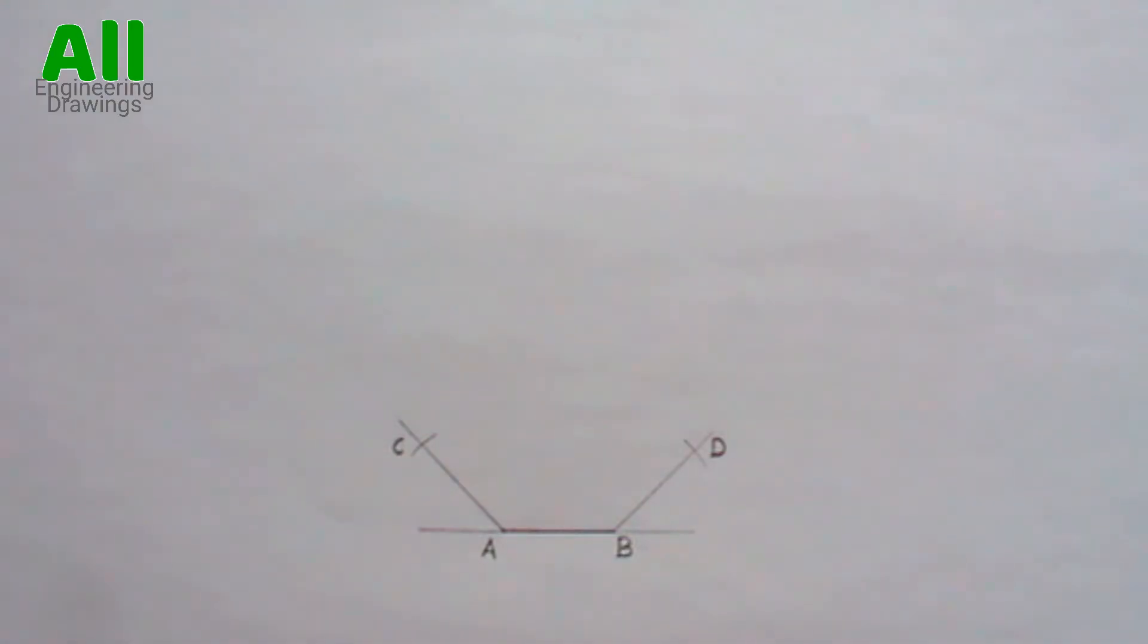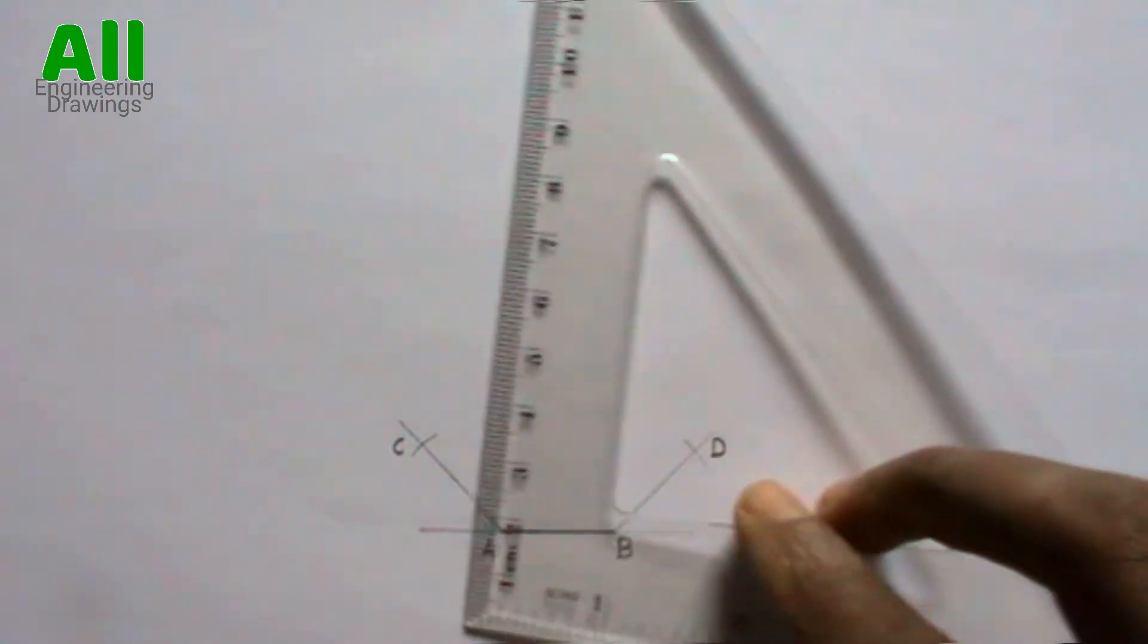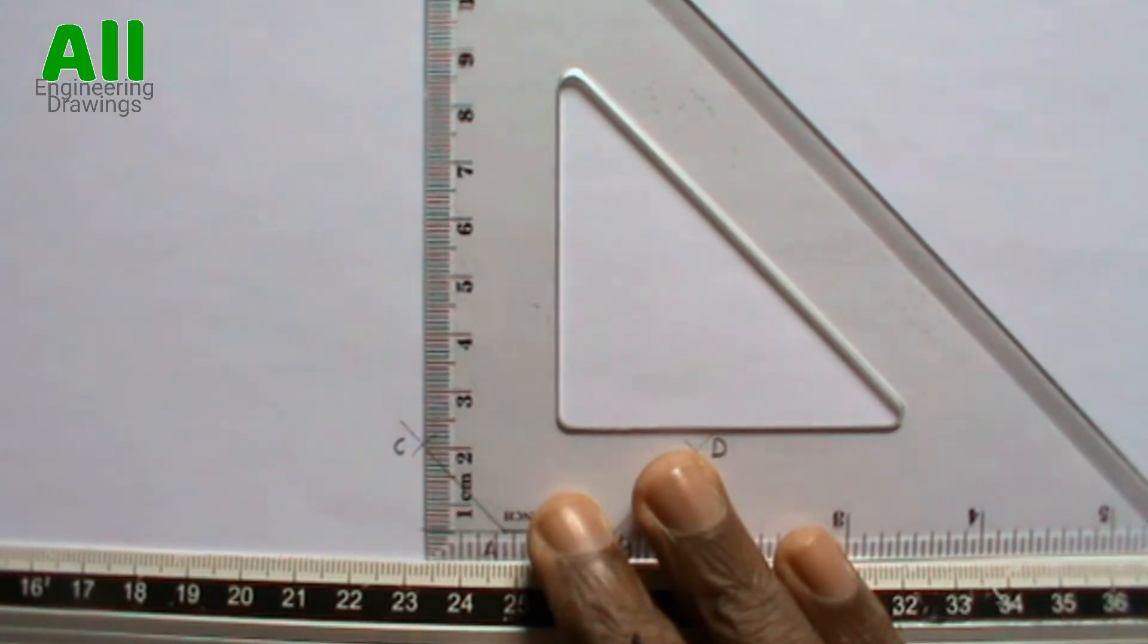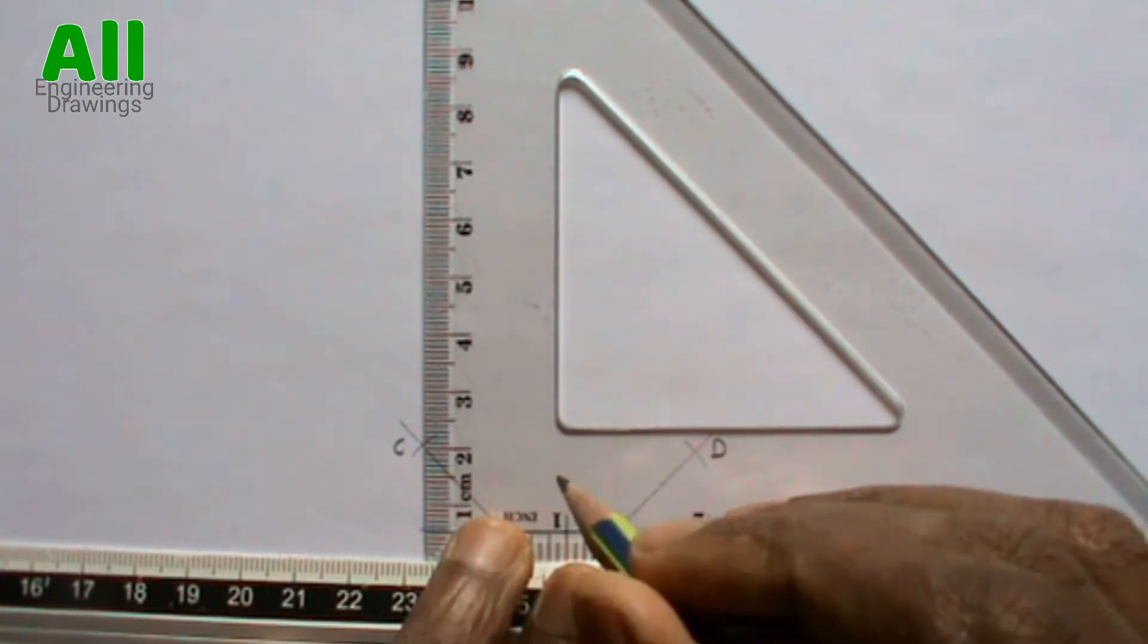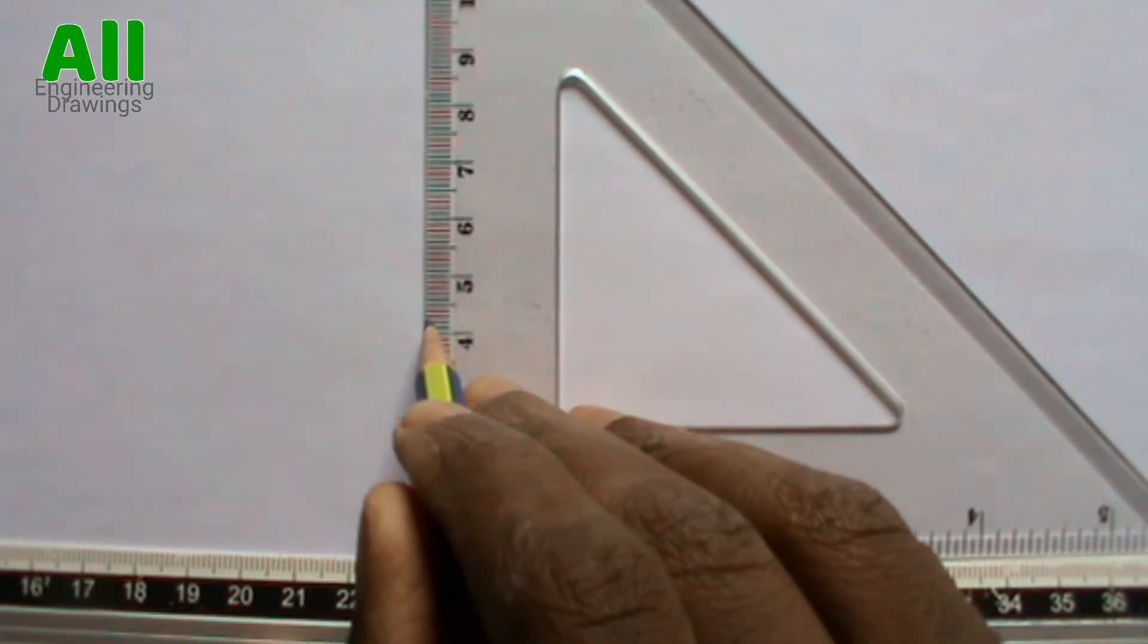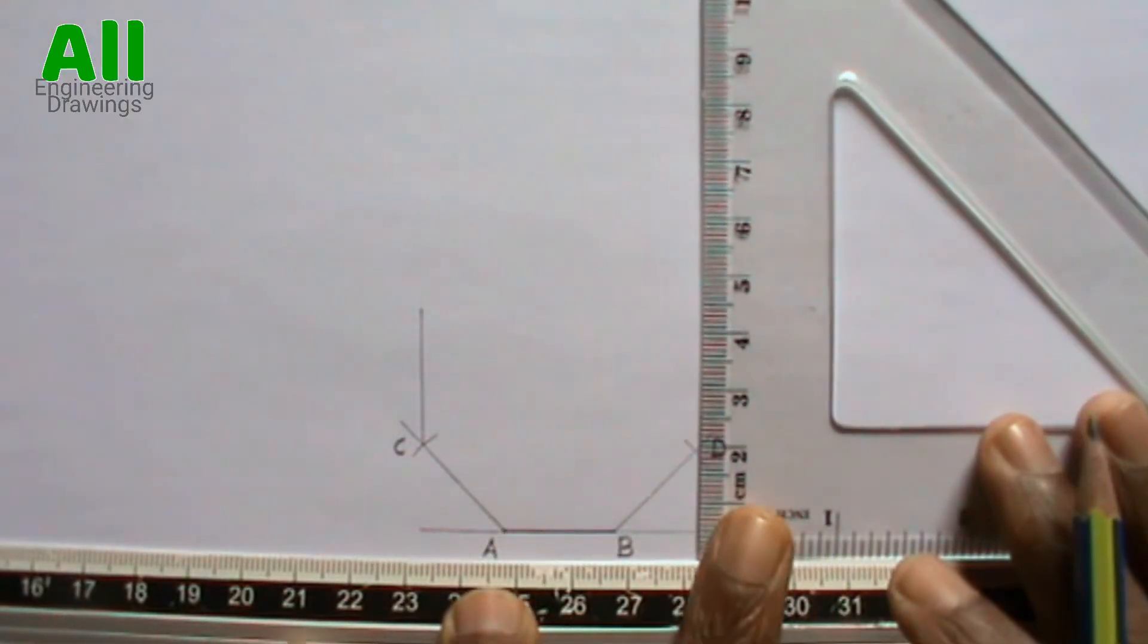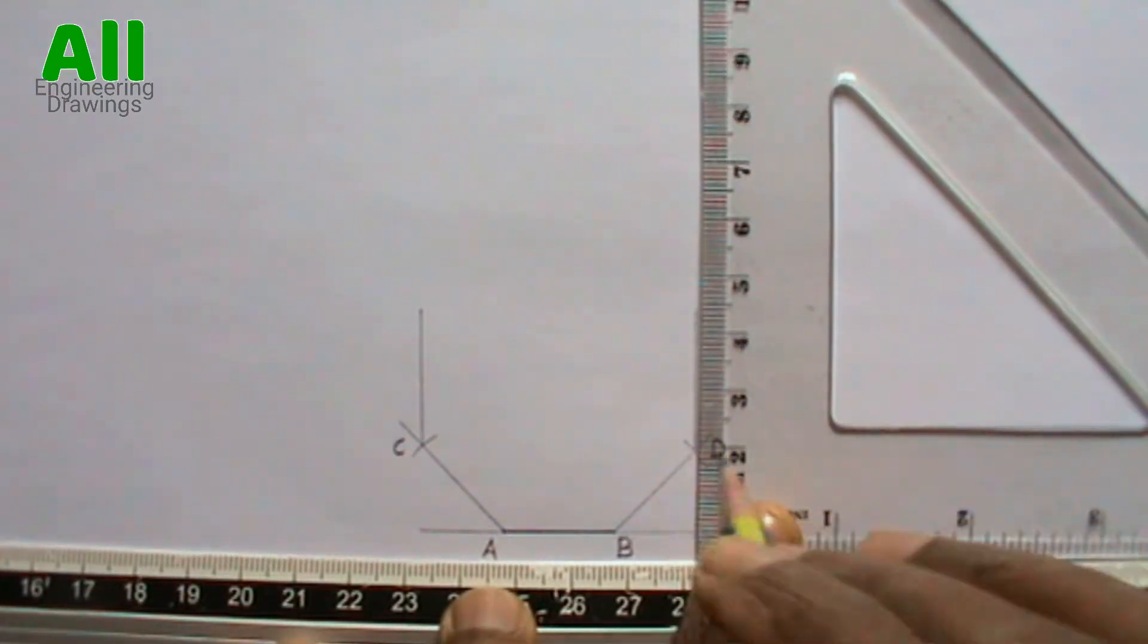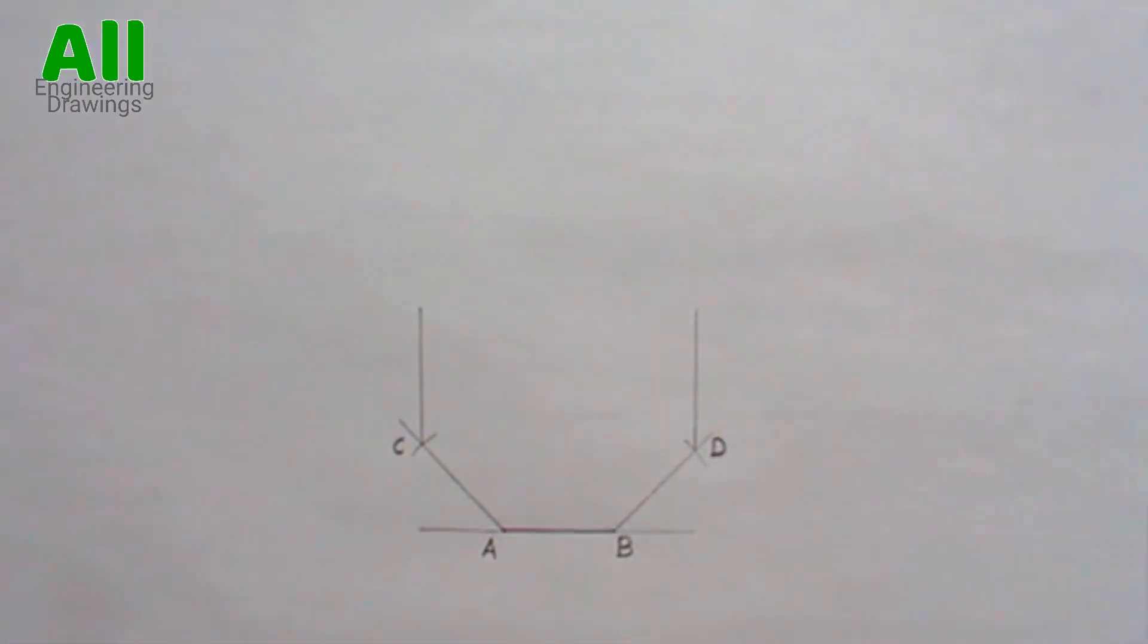Now, draw vertical lines from point C and point D. Now, extend your compass to the radius of line AB, that is the length of side of your octagon.